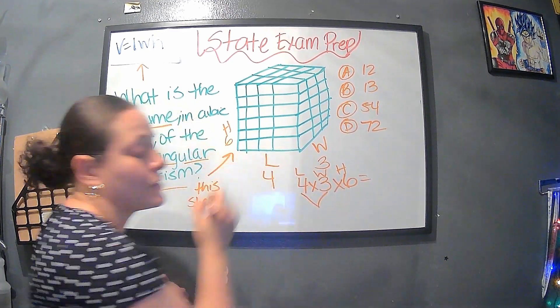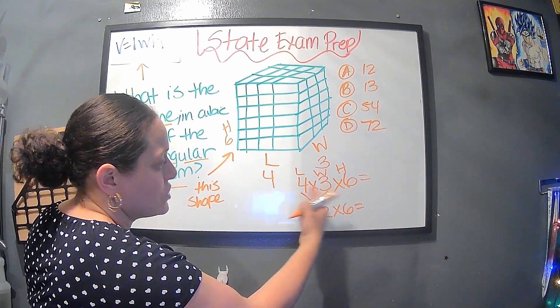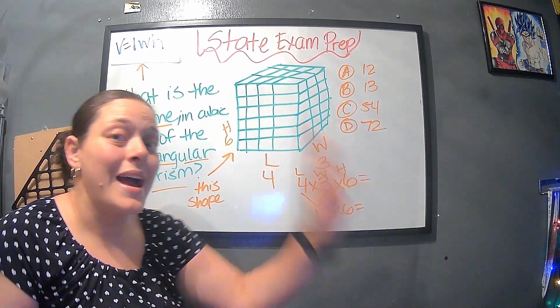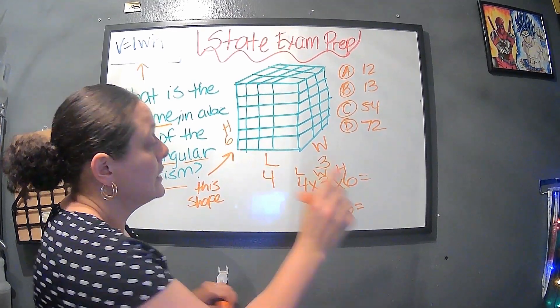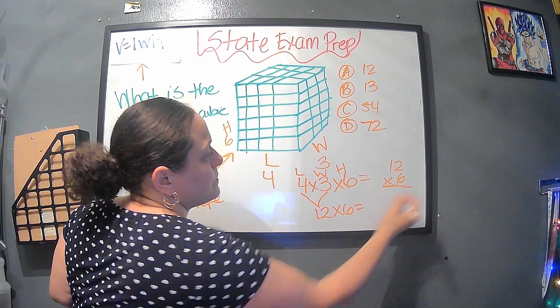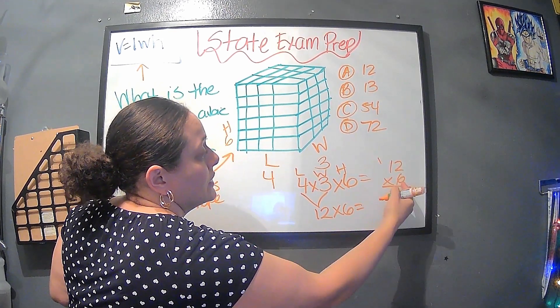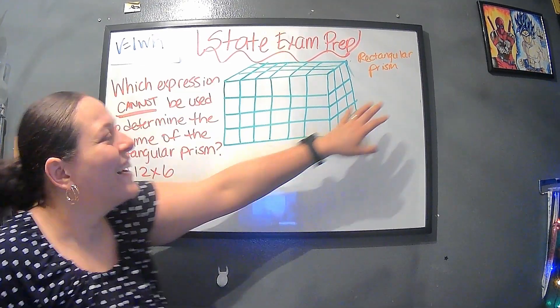We do four times three is twelve times six. Remember that we're not done when we multiply just these two. We have to multiply three numbers. So in this case, it's 12 times six. Let's put this to the side. Now we have six times two is twelve. Six times one is six, plus one more is seven. So the answer is 72.